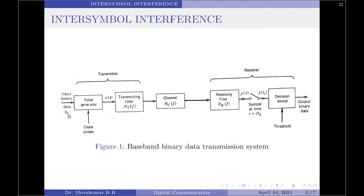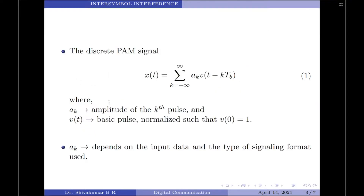The input signal consists of a binary data sequence BK with a bit duration of 1 TB seconds. This sequence is applied to a pulse generator that produces the discrete pulse amplitude modulated signal X(t), given by X(t) = summation over k from minus infinity to plus infinity of AK times V(t minus k*TB), where AK is the amplitude of the k-th pulse and V(t) is the basic pulse shape, normalized such that V(0) equals 1.